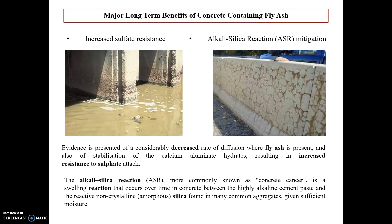Major long-term benefits include increased sulfate resistance and alkali-silica reaction mitigation. Regarding sulfate resistance: there is a considerably decreased rate of diffusion where fly ash is present, along with stabilization of calcium aluminium hydrate, resulting in increased resistance to sulfate attack. The presence of calcium aluminium hydrate in fly ash enhances sulfate resistance — this is a major benefit of fly ash.